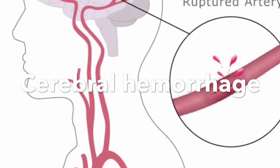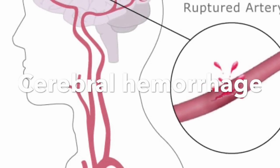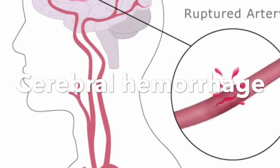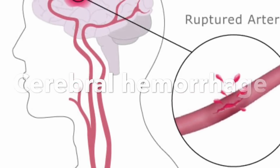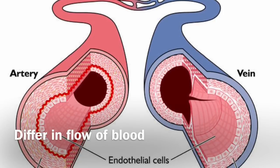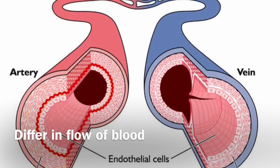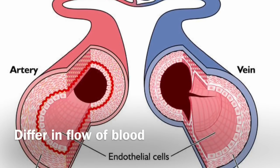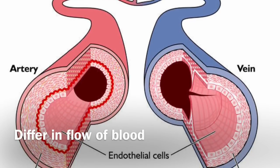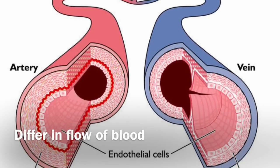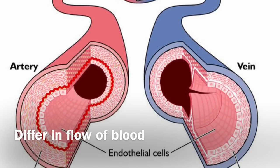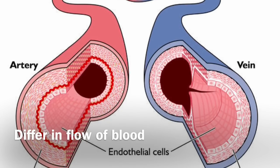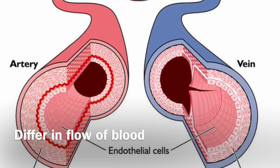Cerebral hemorrhage occurs due to rupture of blood vessels. Blood vessels can be arteries or veins. Arteries and veins differ in their microstructure and in the pressure of blood that flows into them.